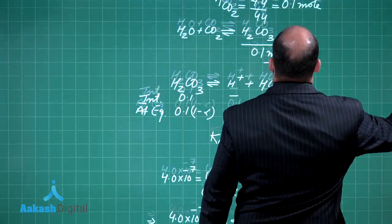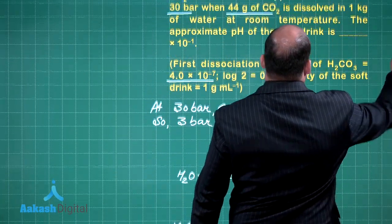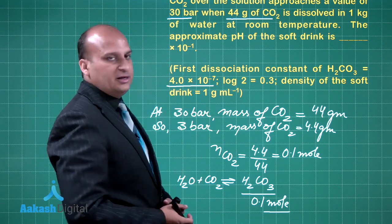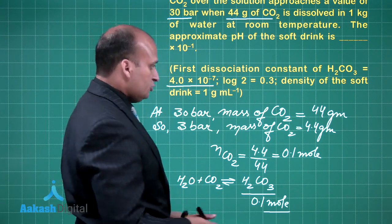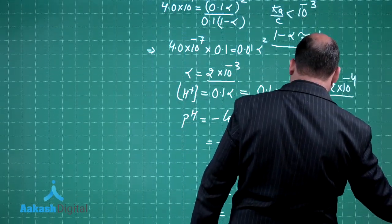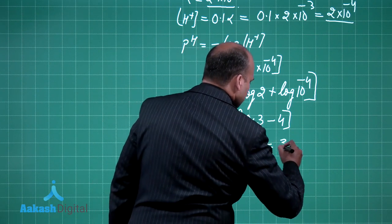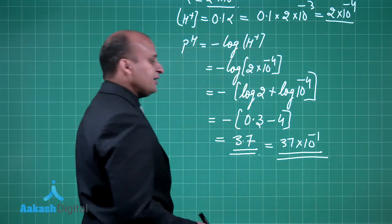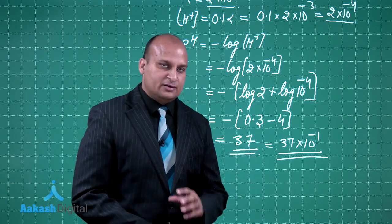But you should check in which form they want you to express it. They want you to express as times 10 to the power minus 1. We are getting the value as 3.7, so we should be writing it as 37 times 10 to the power minus 1. So in the blank you should be writing 37.